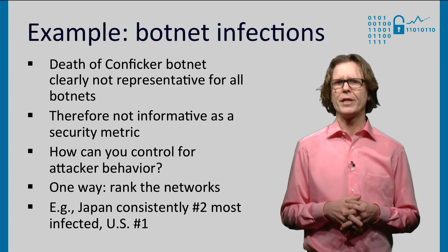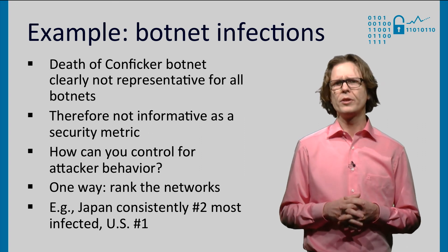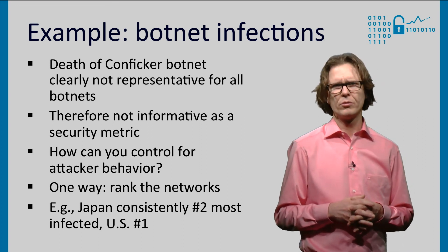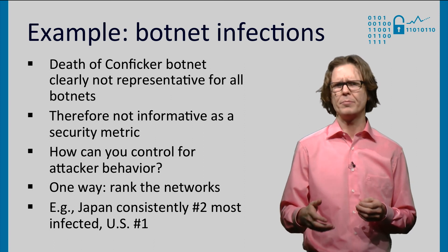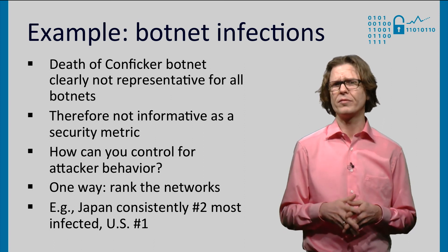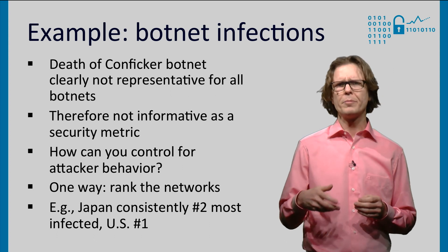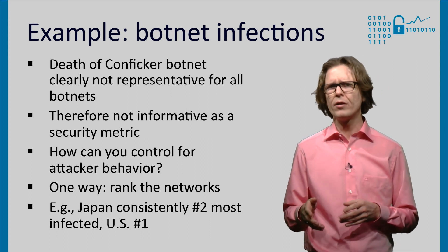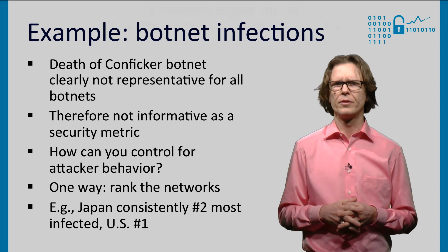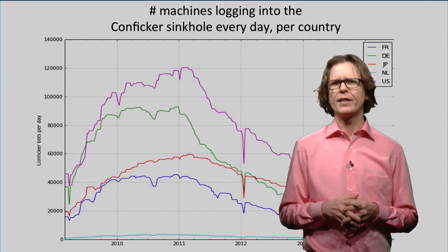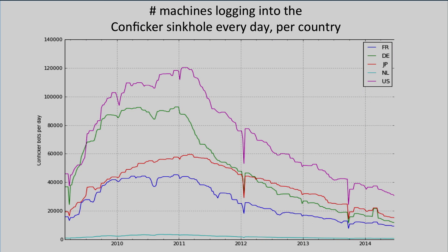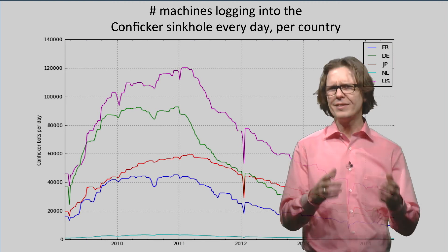So how could you control for attacker behavior? One way is to rank the networks. Rather than looking at the absolute number of incidents — which is mostly driven by the attacker — you turn the metric into a rank order that expresses how well or poorly each network does. In a rank metric, Japan, the second line from the top, would consistently be the number two most infected over the whole period, while the US, the top line, would be number one. The fluctuations of the exact number of incidents have then been taken out of the metric.